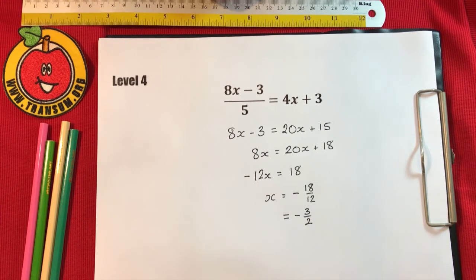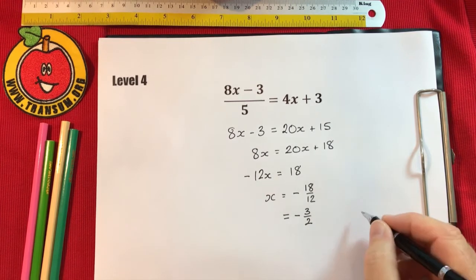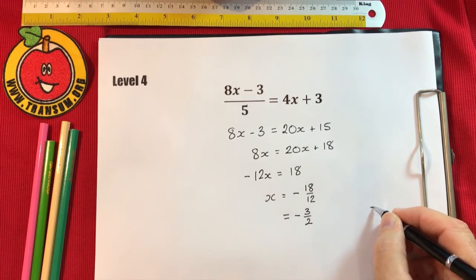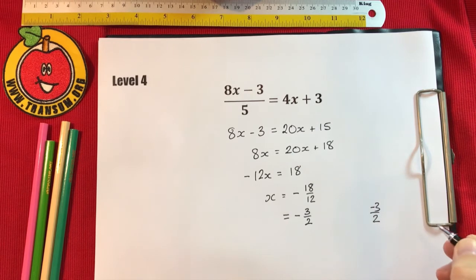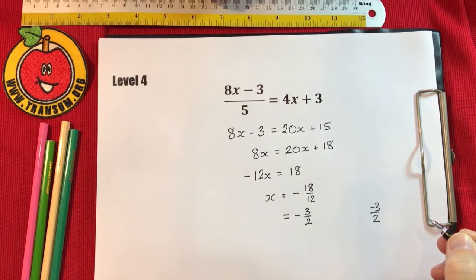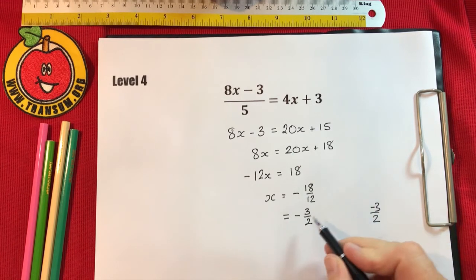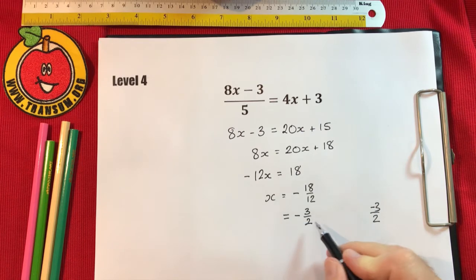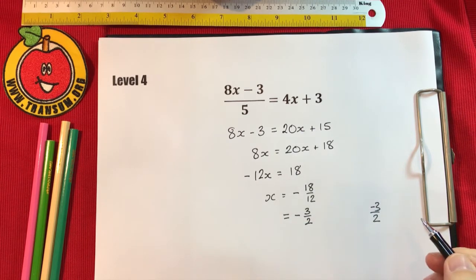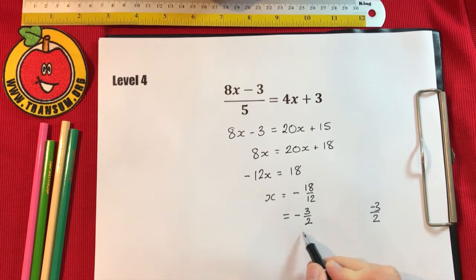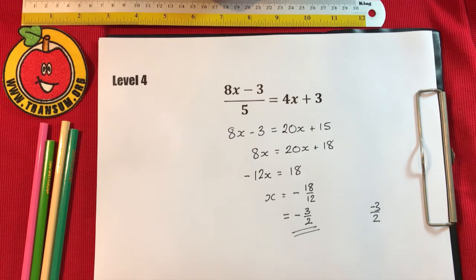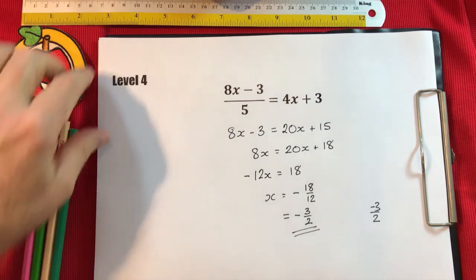If I divide the top and bottom by 6, I'll get the fraction in its lowest form: negative 3 over 2. Now even though minus 3 over 2 is technically correct, the answer being looked for is with the minus sign in front of the fraction — so just type it like that in the online page. Have a go at level 4.